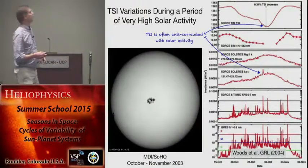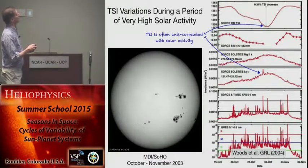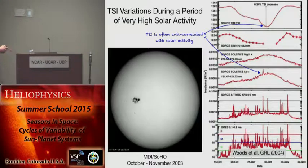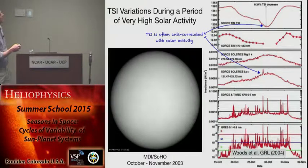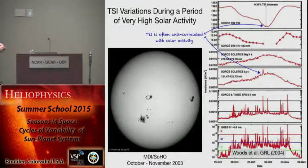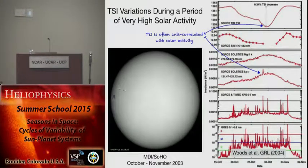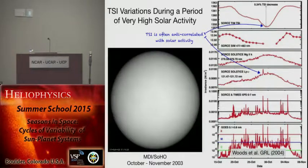Here's a measurement of the TSI from the TIM instrument on SORCE over October to November 2003, when we had enormous active regions on the disk. You can see the TSI actually falls as these active regions proceed across the disk. Now, the contribution of activity isn't always negative. If you look closely at the limb around these sunspots, you'll see bright faculae. Faculae are magnetic elements that are actually bright, so you have a competition between sunspot darkening and facular brightening that determines the variability.